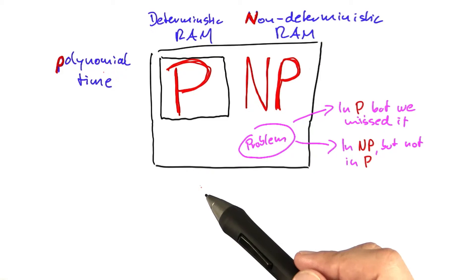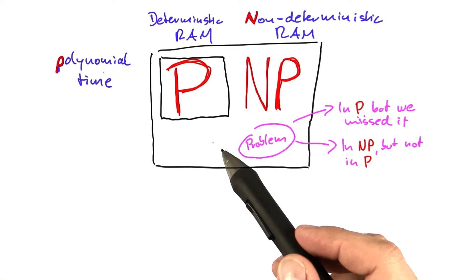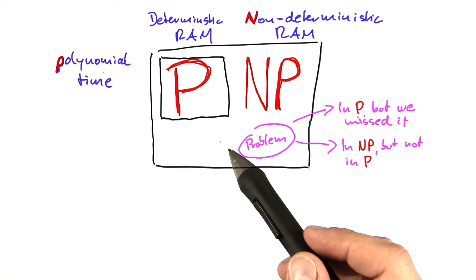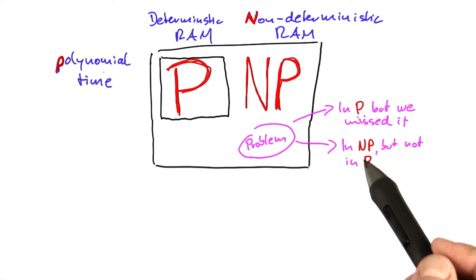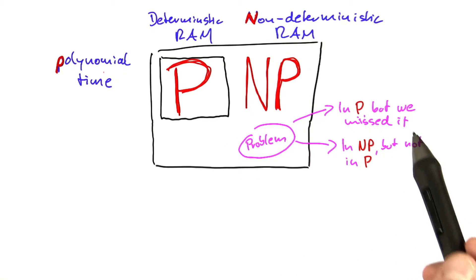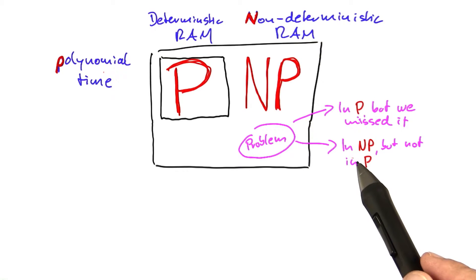The cool thing is that for some problems, we know that they are closely related enough so that it's actually sufficient to decide this question here. If we missed a polynomial time algorithm or if we just have no chance, it's actually sufficient to decide this question for only one of the problems.